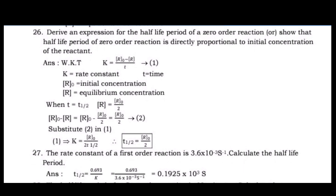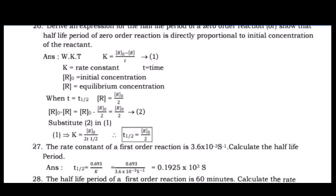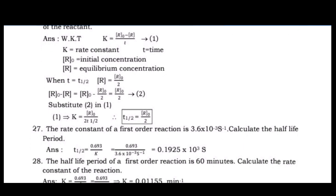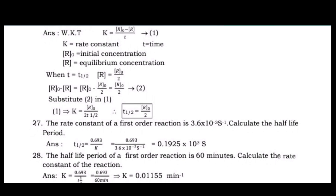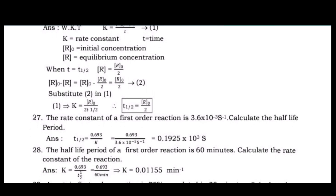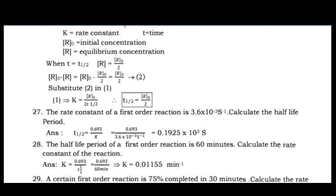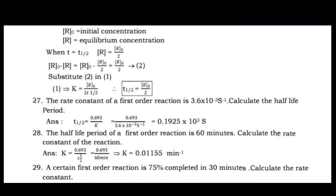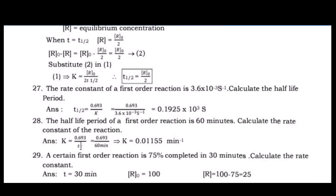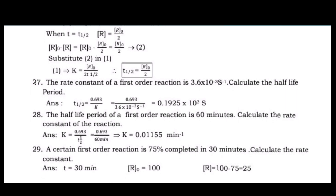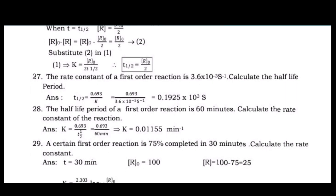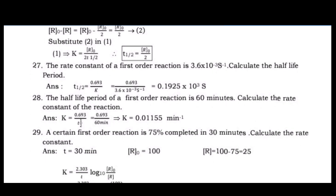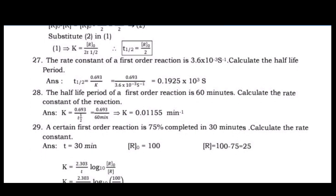Question 27: The rate constant of a first order reaction is 3.6 × 10⁻³ s⁻¹. Calculate the half life period. Question 28: The half life period of a first order reaction is 60 minutes; calculate the rate constant of the reaction.